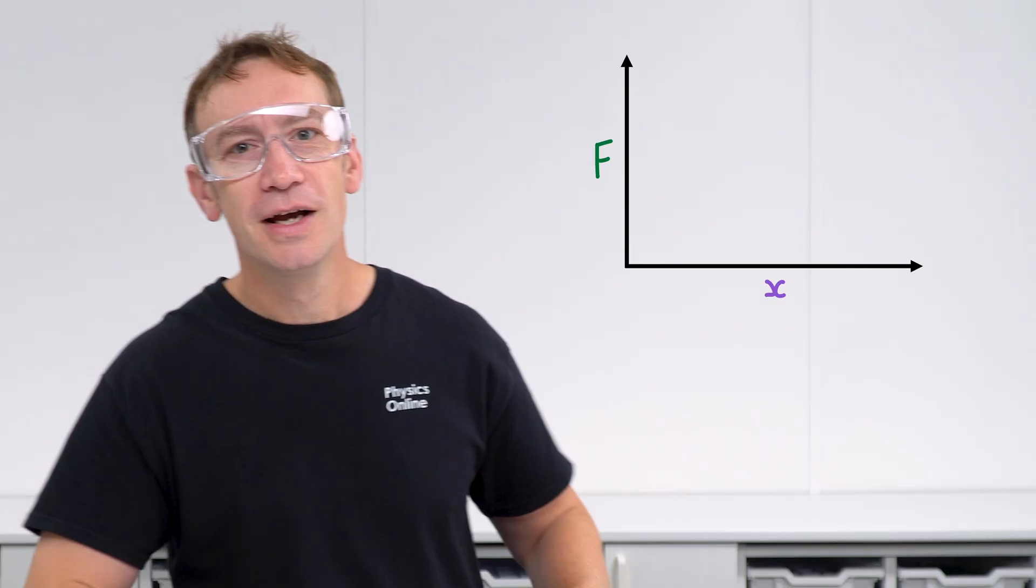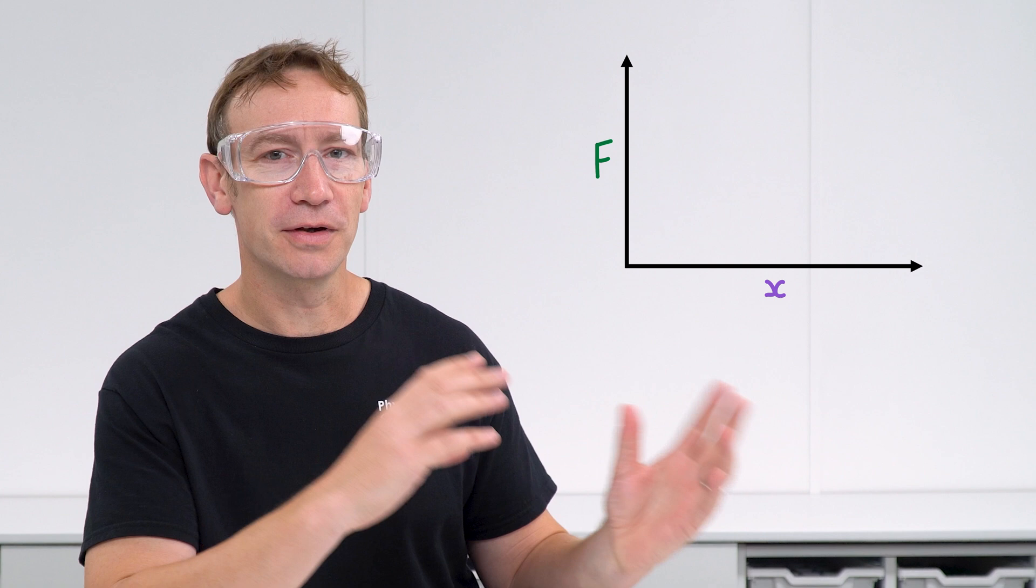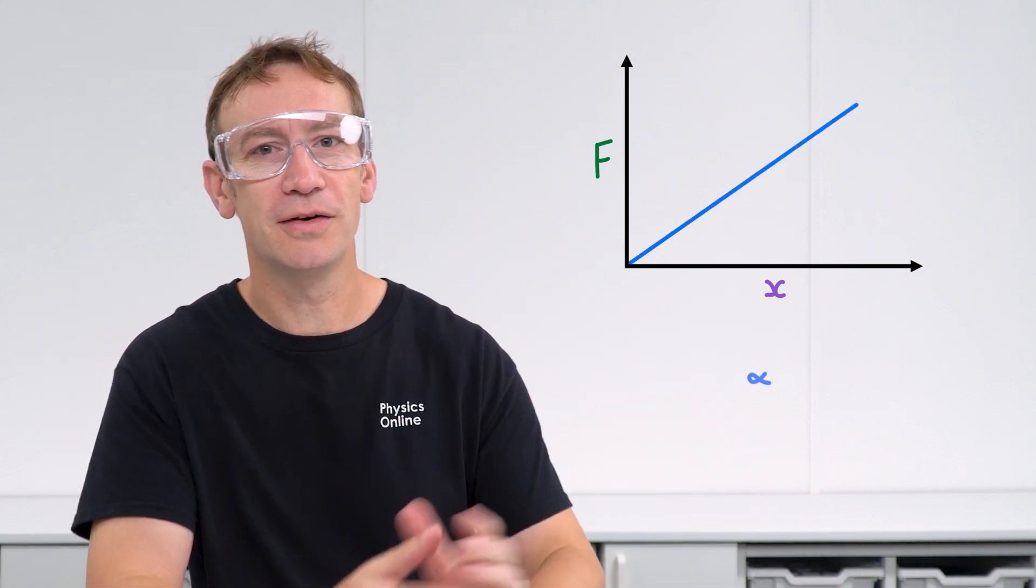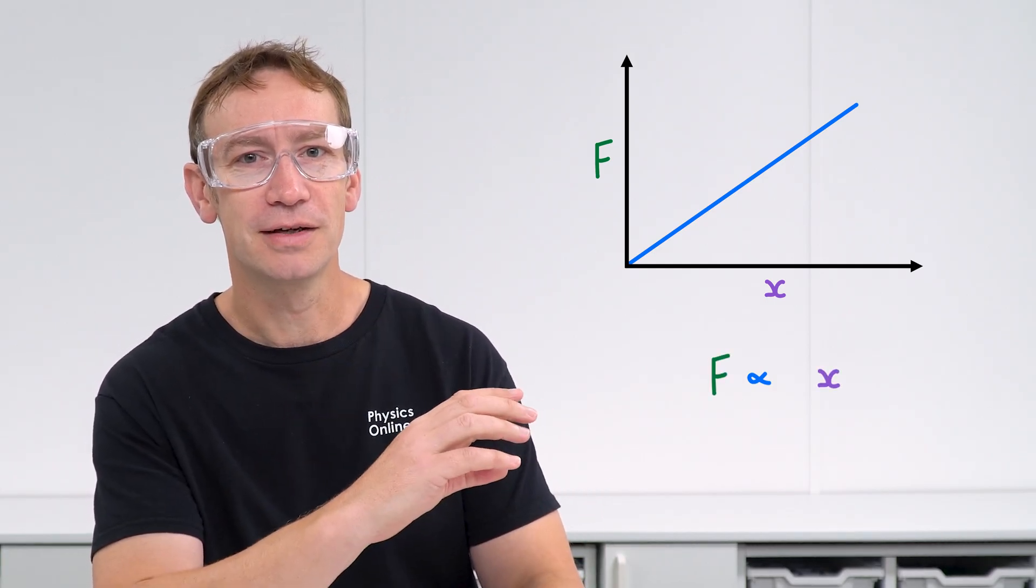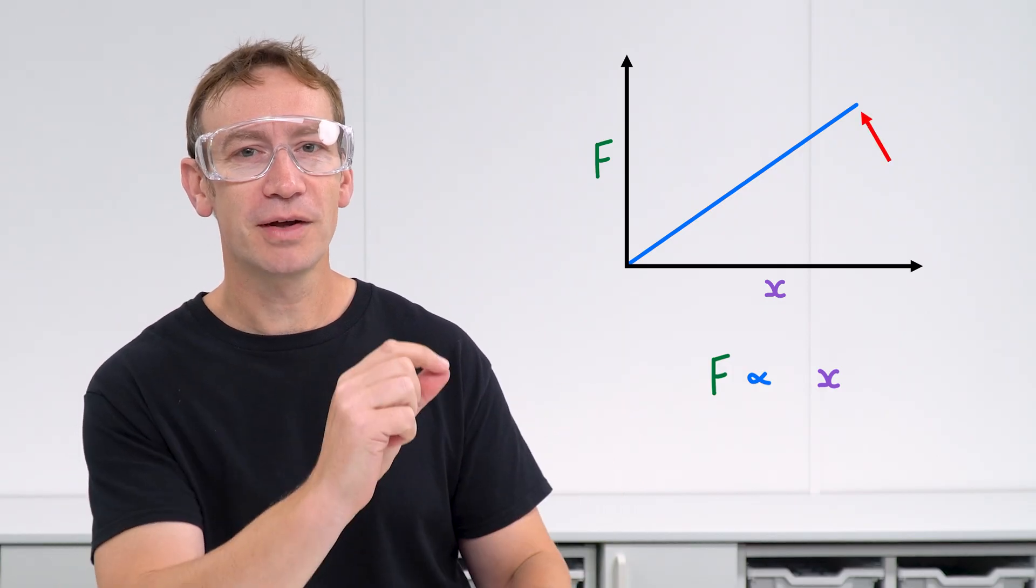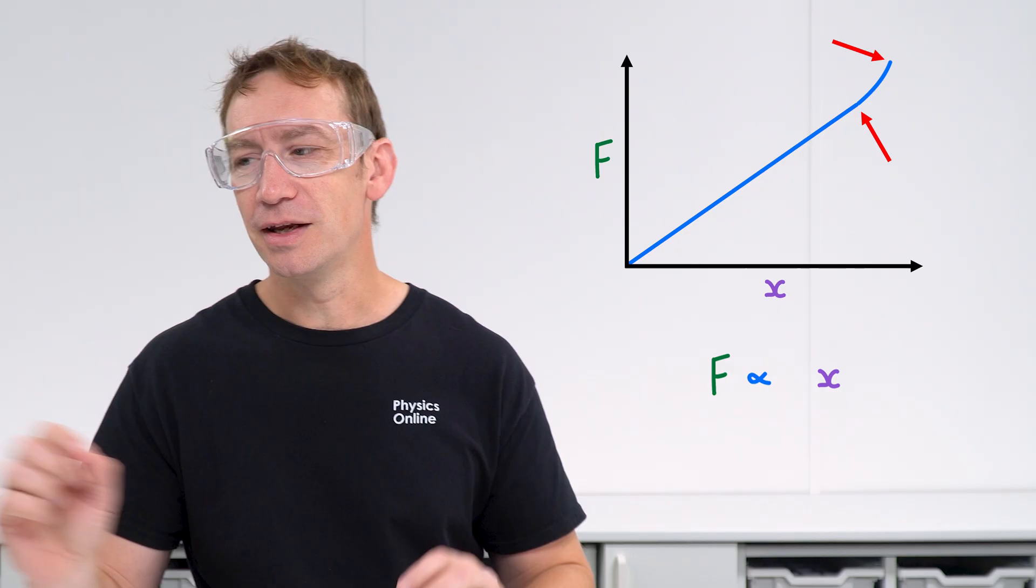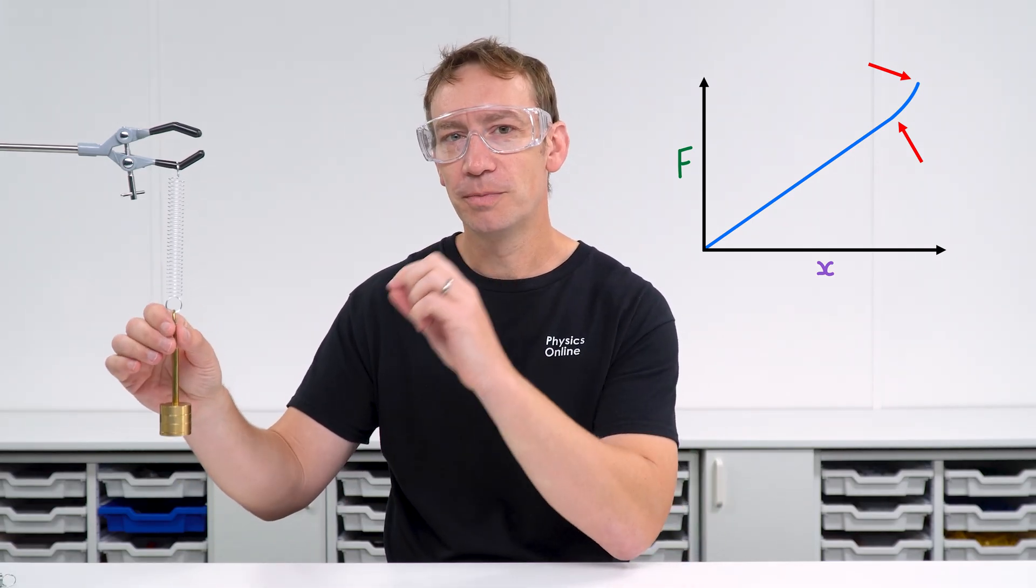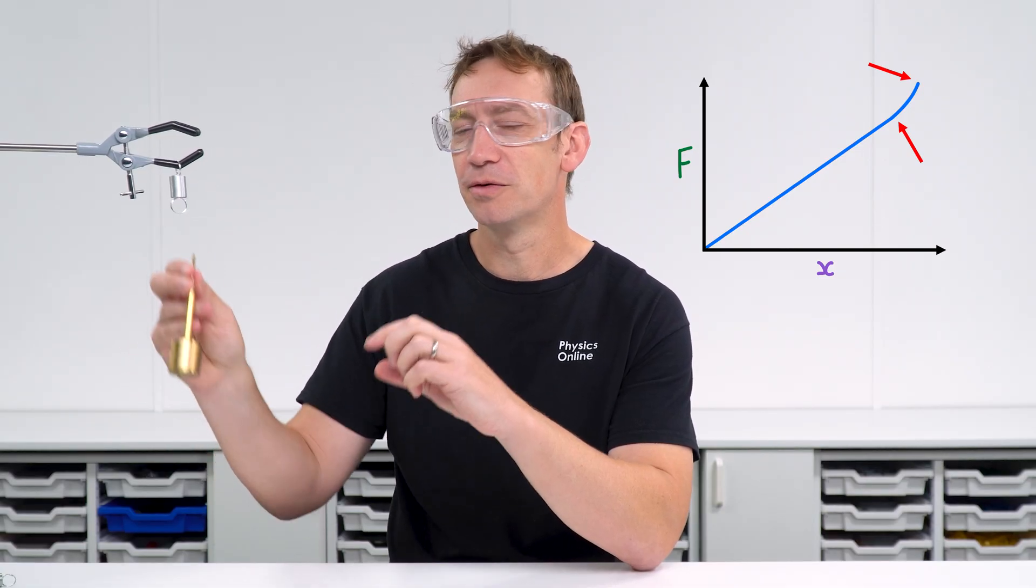First of all, going through the theory: if you apply a force to a spring, it's going to extend it, and there's a point where we have this proportional relationship between the extension and the force being applied. This happens up until we get to what we call the limit of proportionality. Sometimes just beyond this we have the elastic limit, and actually what we find is when this is getting towards its limit, it might stretch non-proportionally where the force isn't proportional to the extension, but it will still go back to its original shape.